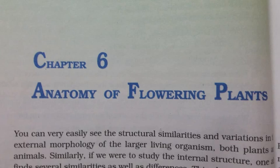The anatomy of the monocot root is similar to the dicot root in many respects. It has epidermis, cortex, endodermis, pericycle, vascular bundles and pith. As compared to the dicot root which has fewer xylem bundles, there are usually more than six xylem bundles in the monocot root. Pith is large and well developed. Monocotyledonous roots do not undergo any secondary growth.